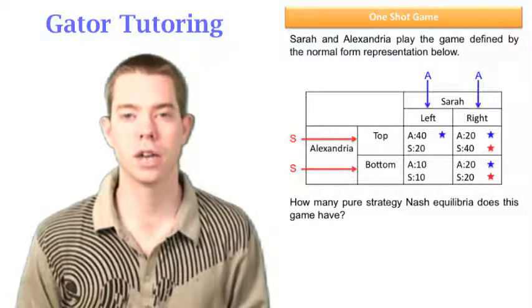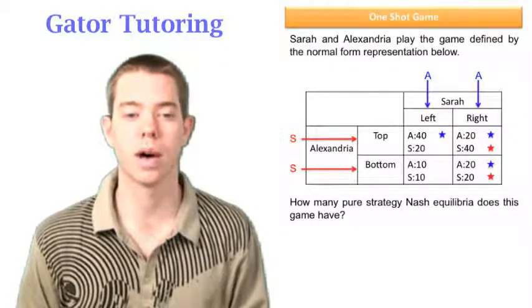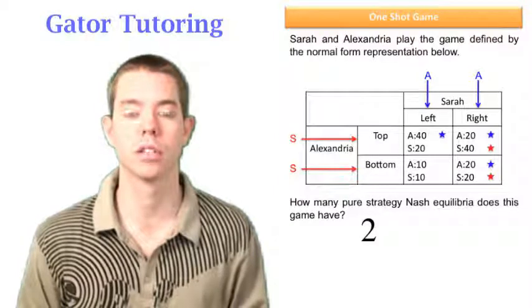Well, we see that a pure strategy Nash equilibria is two stars in one box, and in this case we have two pure strategy Nash equilibria.